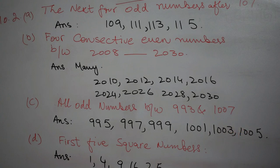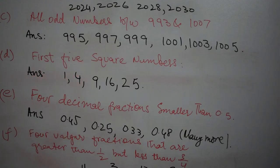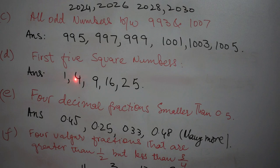After this comes part D. Part D says first five square numbers. No problem. Multiply one with one, we get one. Multiply two with two, we get four. Multiply three with three, we get nine. And so on. We have taken all the five numbers up till 25. You see here: 1, 4, 9, 16 and 25.